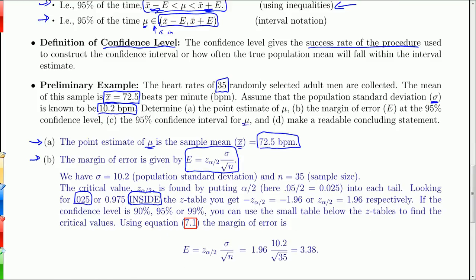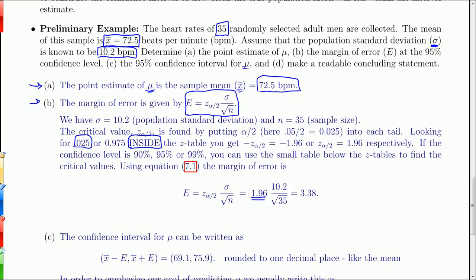Let's go back up here. So what we did. So we found our critical value. Z sub alpha over 2 is 1.96. And then sigma is the population standard deviation, which we found to be 10.2. And then we divide by the square root of n, which was 35. We had a sample of 35. When you do that, you get 3.38. And that's what we call the margin of error. 3.38. So basically we have a sample mean of 72.5 beats per minute with a margin of error of 3.38.